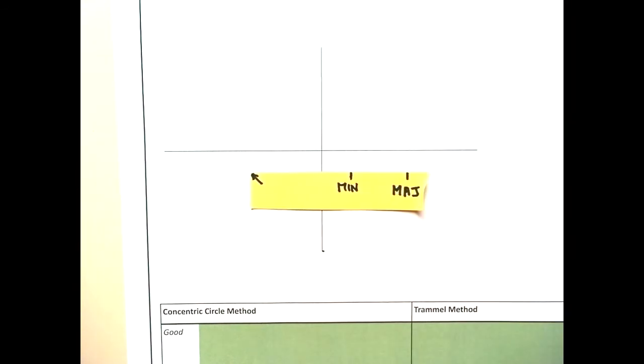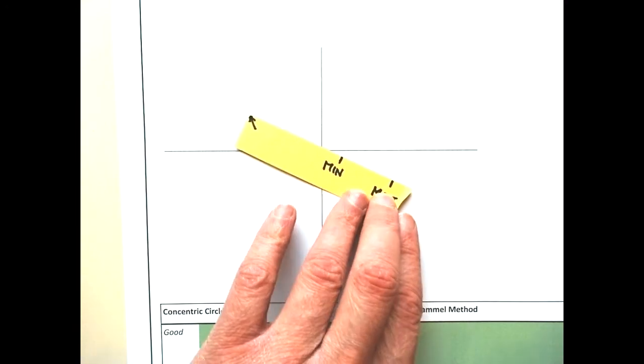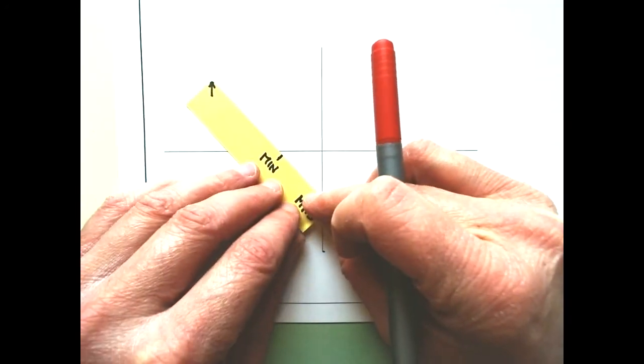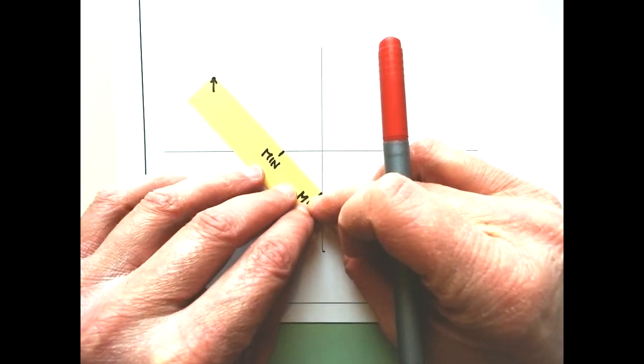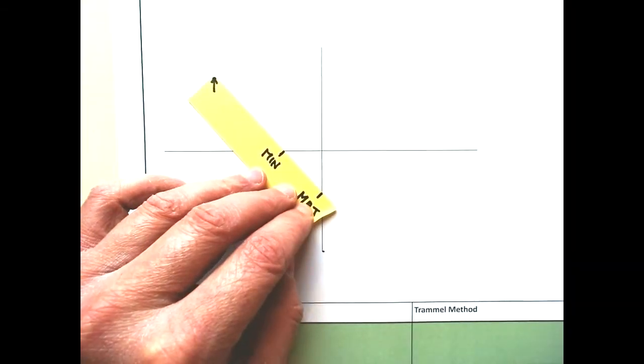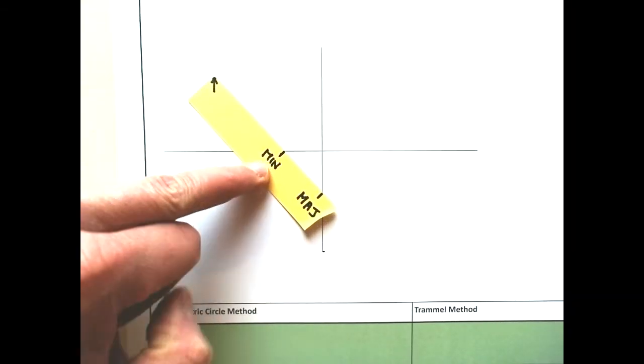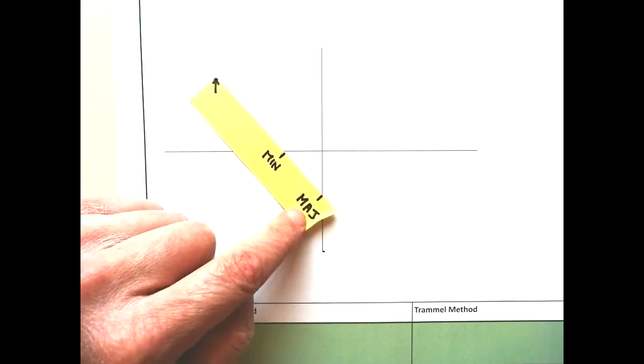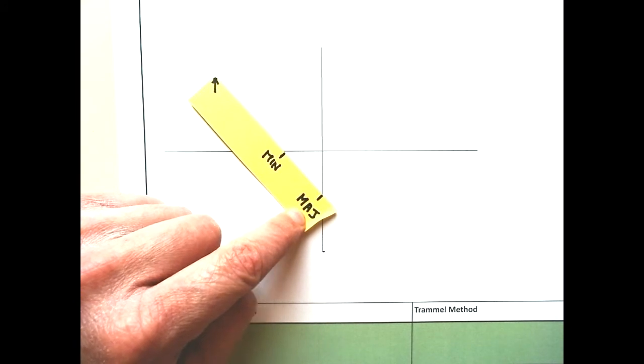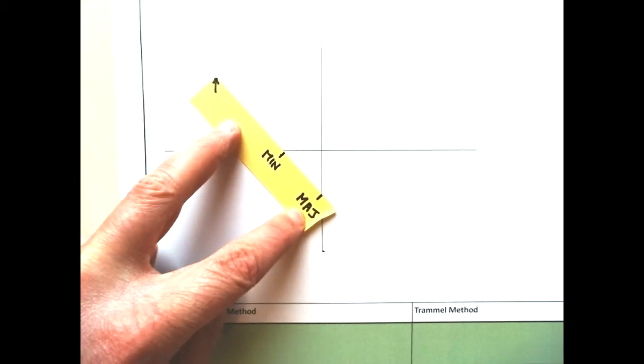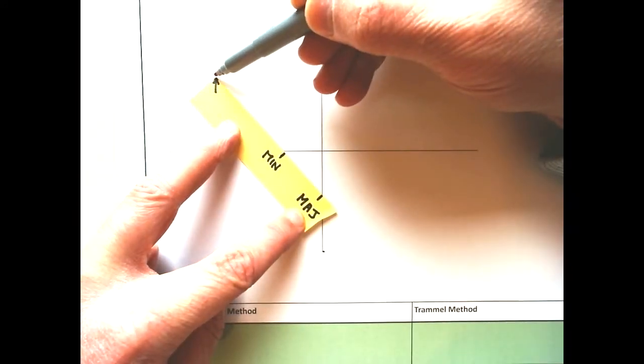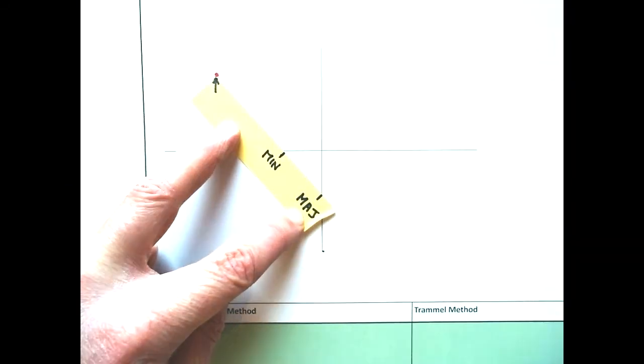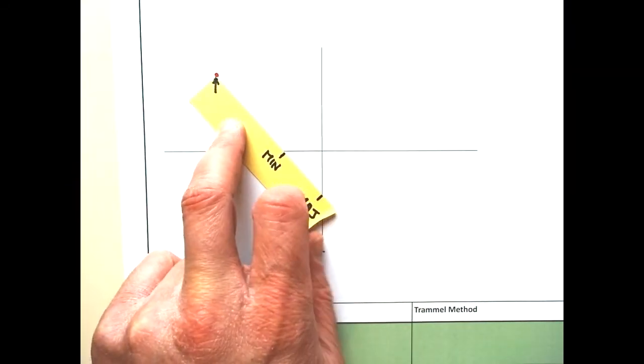To use this trammel to find the points we need to line our minor axis up against our major axis and our major axis dot up on the minor axis. That sounds confusing but look at the picture and it will make sense. The minor dot on the major axis, the major dot on the minor axis, the short line. And where you marked your center point is where you are going to find points on the curve.